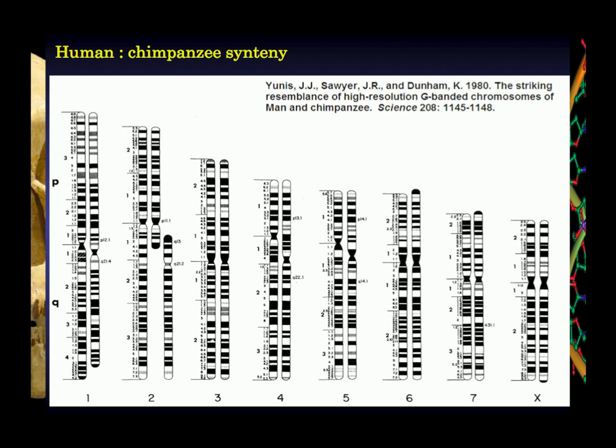What you'll notice is that in certain cases we see those inversion-type events — here in number four, you can see there's evidence based on the banding patterns that there's probably an inversion relative to one species versus the other. One thing that should jump out at you right away: human chromosome 2 has that information present as one chromosome in humans, but we see it as two distinct chromosomes in chimpanzees, and in gorillas it's also in this two-chromosome form.